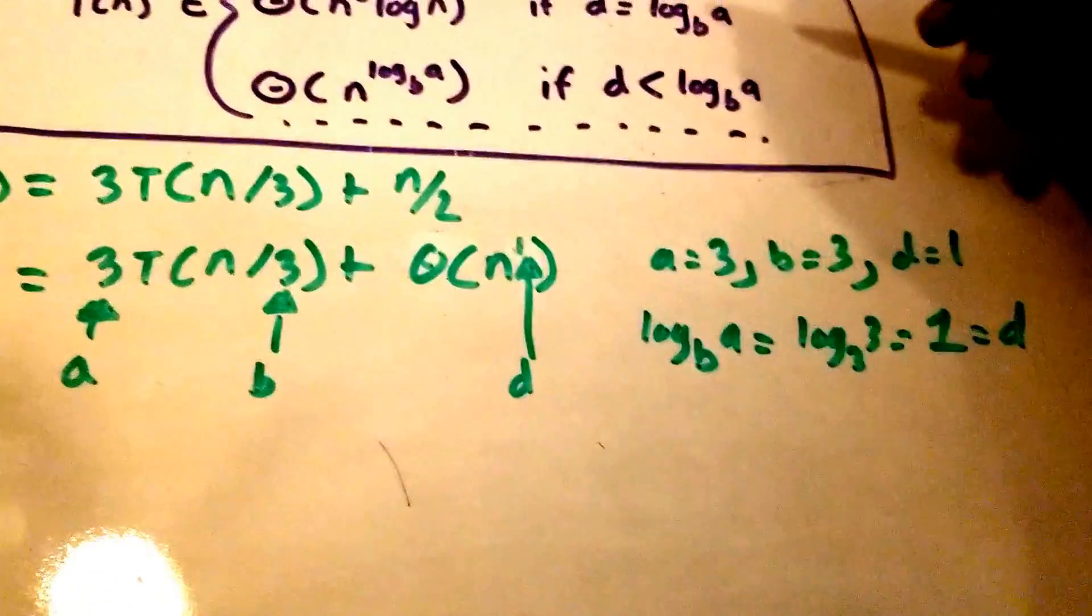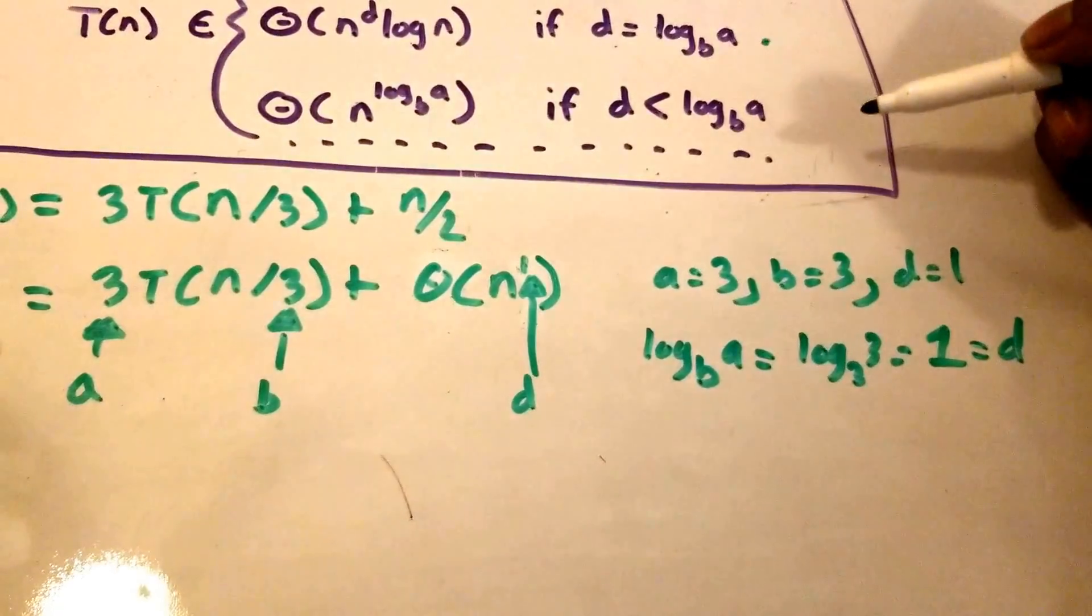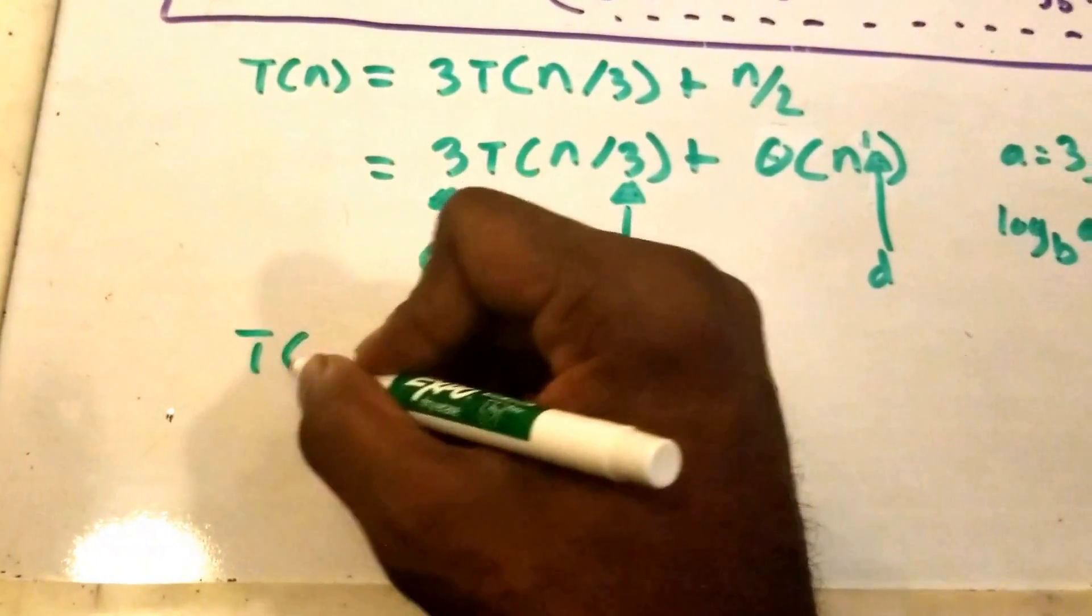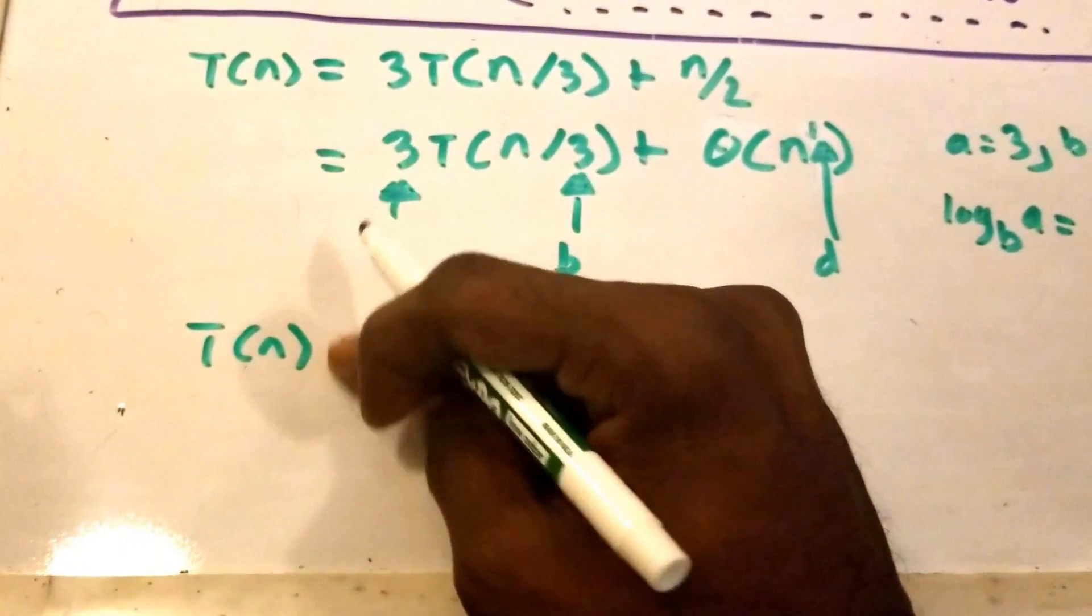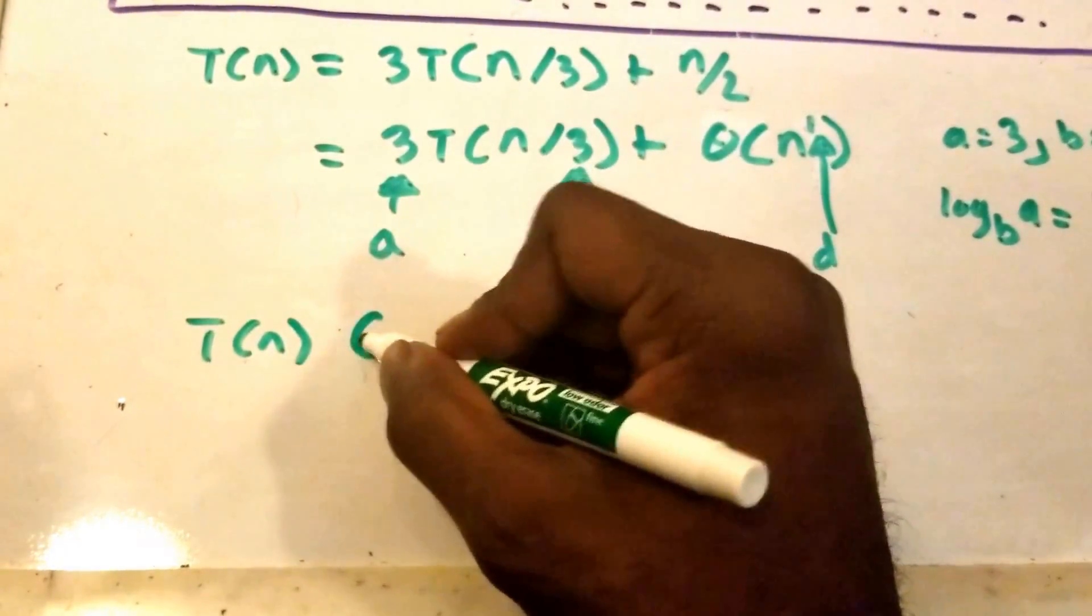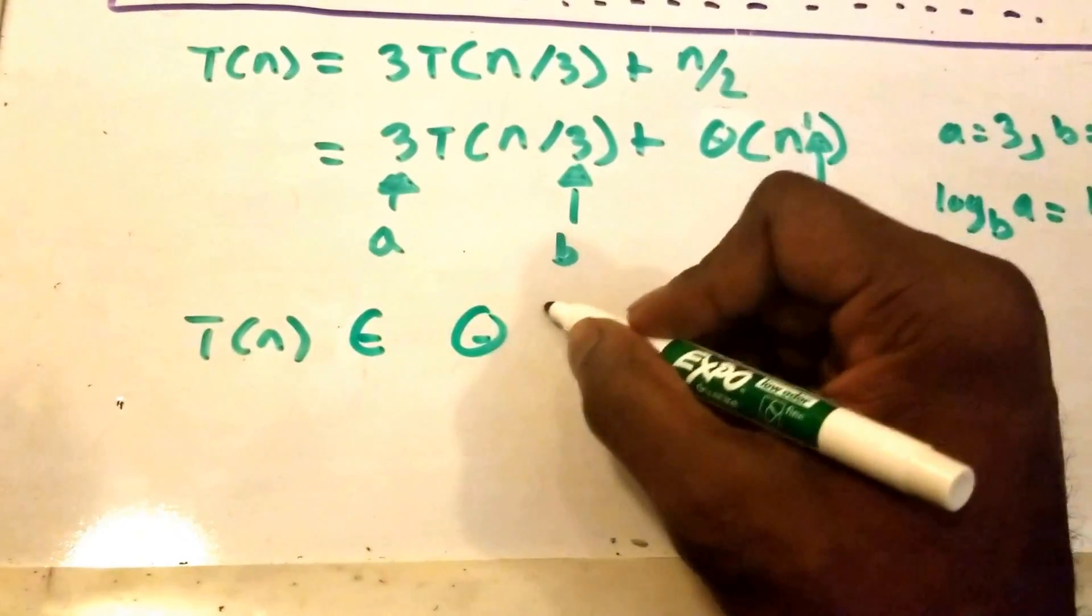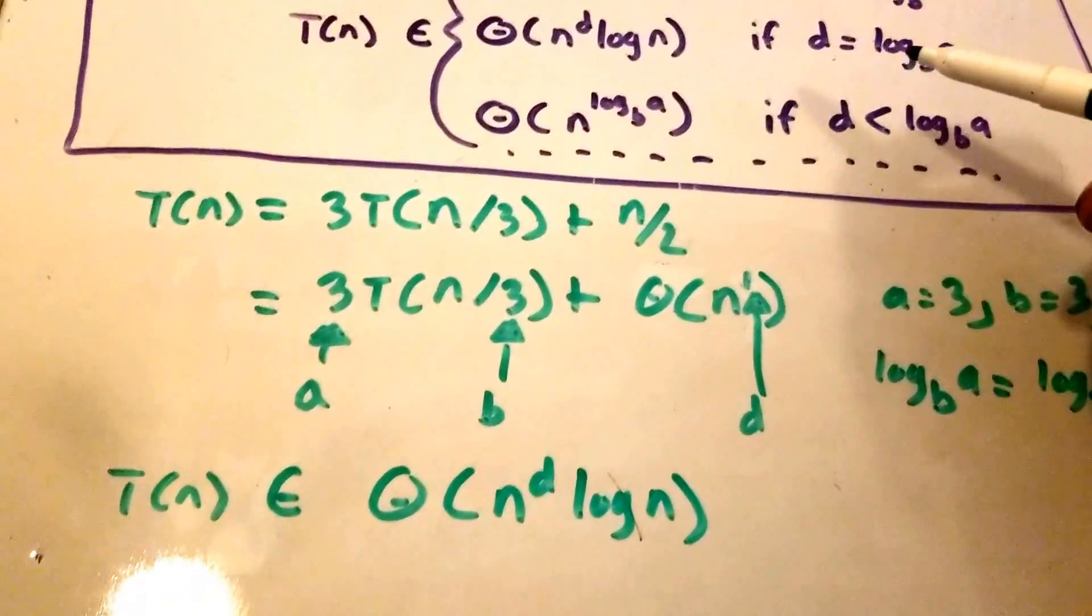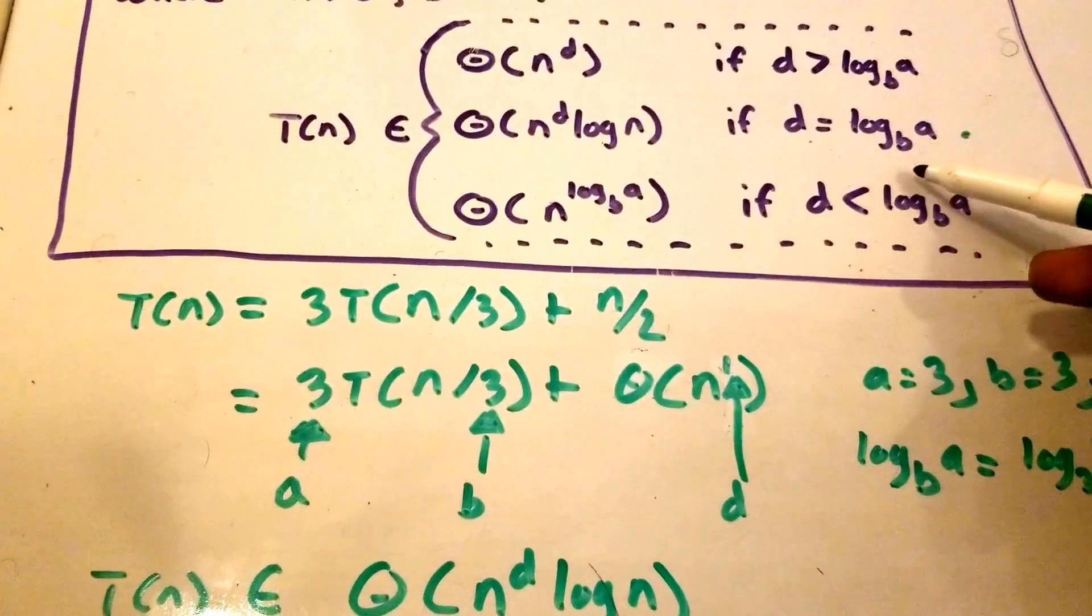Therefore, we're going to use this second case here. So the second case is telling us that our T(n) belongs to big theta of n to the power of d times log n because d is equal to log base b of a.